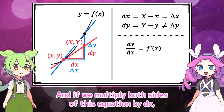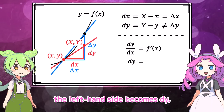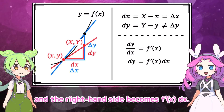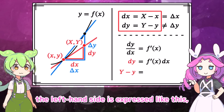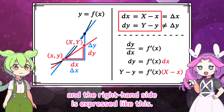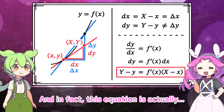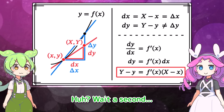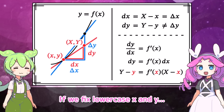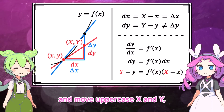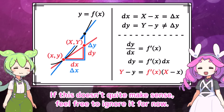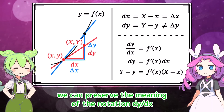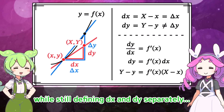If we multiply both sides of this equation by dx, the left-hand side becomes dy, and the right-hand side becomes f prime of x times dx. Using the definitions of dx and dy, the left-hand side is expressed like this, and the right-hand side is expressed like this. In fact, this equation is actually the equation of the tangent line. If we fix lowercase x and y and move uppercase X and Y, then (X, Y) moves along the entire tangent line with slope f prime of x. With this approach, we can preserve the meaning of dy by dx while still defining dx and dy separately.